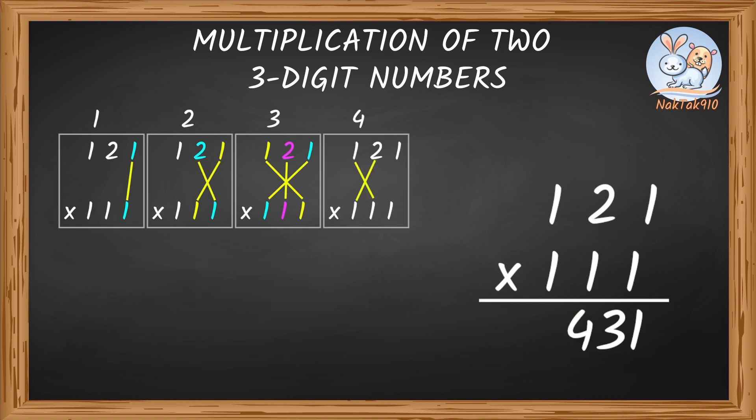Step 4. Now cross-multiply. Multiply 1 and 1 and 2 and 1 and then add these products. So, 1 plus 2 equals 3. Write this 3 to the left of 4.